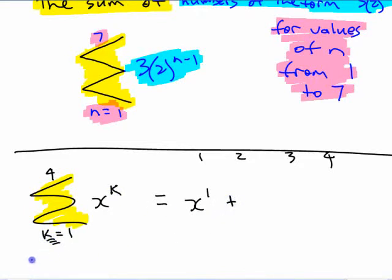What's the second term going to be? We're going from one up to four. We started at one, so what's the second term? Where do I get that? We used k equals one, so next we go to k equals two, right? x to the two.